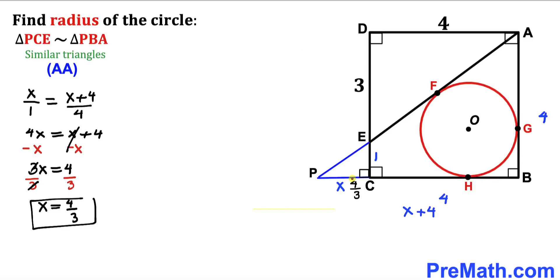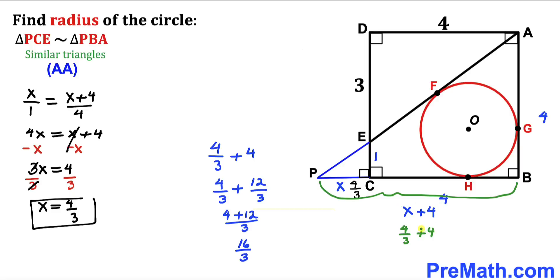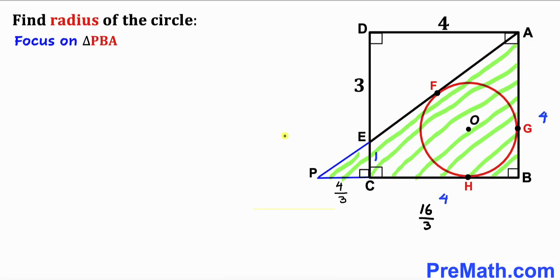So X equals 4/3, and the whole side length X plus 4 becomes 4/3 plus 4, which equals 16 divided by 3.